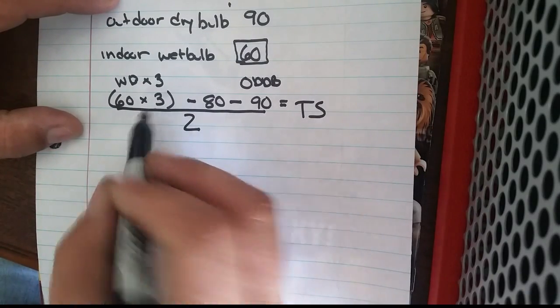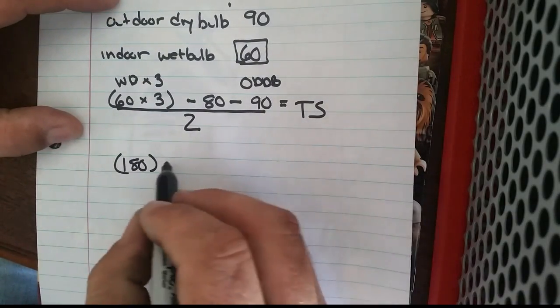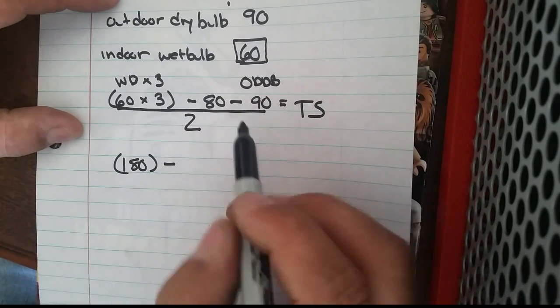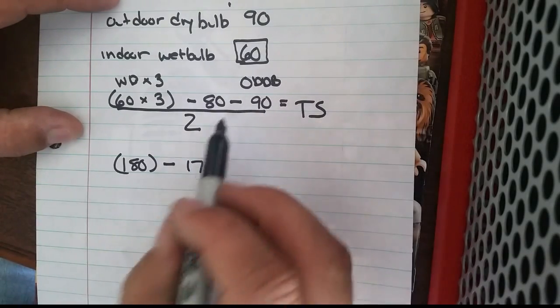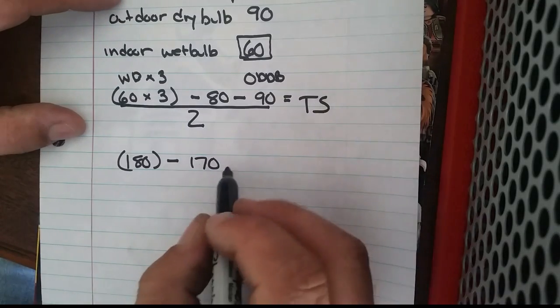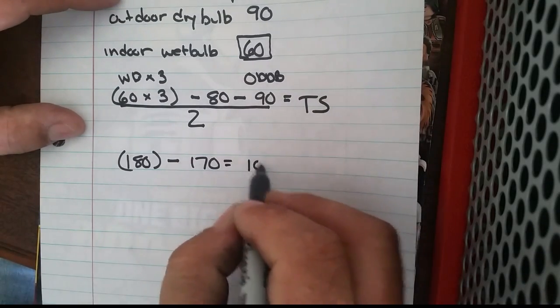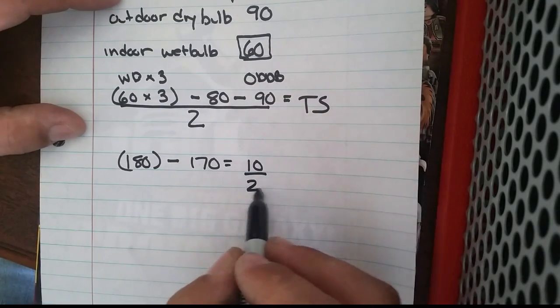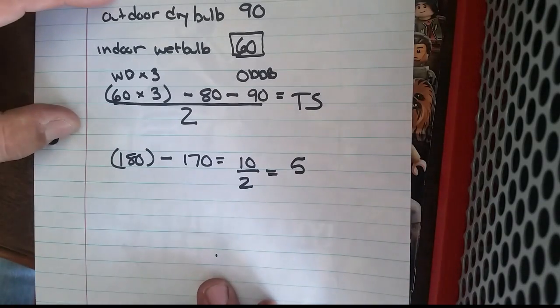So let's figure out what it is: 60 multiplied by 3, we have 180, minus 80 and 90—so minus 170—which is going to equal 10. 10 over 2 equals a target superheat of 5.